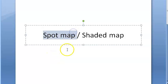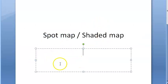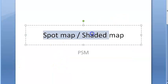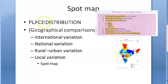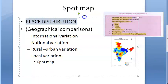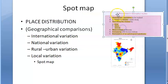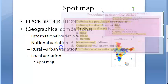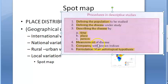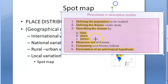In this video, let us look at the spot map or shaded map. In community medicine or preventive and social medicine, if they ask you a question about what is a spot map or shaded map, you have to write this. Basically, in epidemiological studies, you have seen descriptive studies — under descriptive studies you will define the population to be studied, define the disease, and describe the disease by time, place, person, etc.